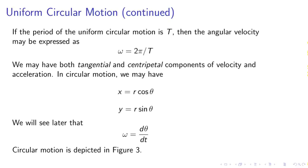For uniform circular motion, the period is T, and the angular velocity may be expressed as omega equals 2 pi over T. We may have tangential and centripetal components of the velocity. X equals R cosine theta, Y equals R sine theta. You will see later that omega equals d theta dt as well.